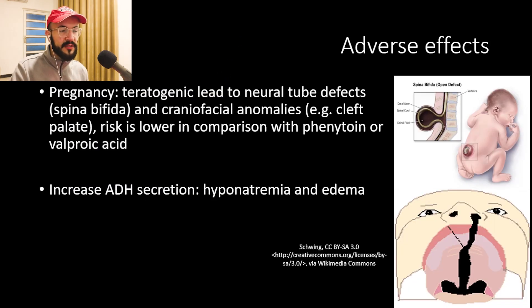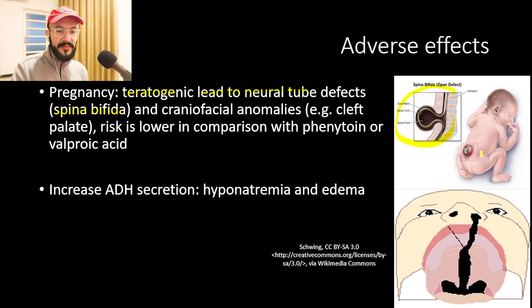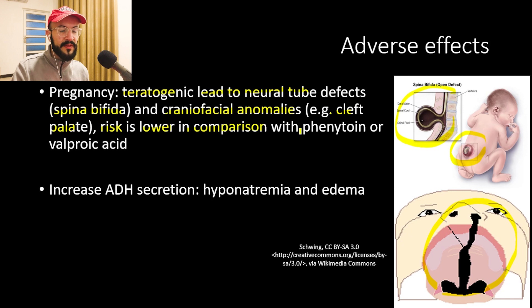If carbamazepine is given during pregnancy, it is teratogenic. It may lead to neural tube defects like spina bifida, which is incomplete closing of the spinal cord, leading to the spinal cord protruding into the outside environment, as shown in the picture here. It may also lead to craniofacial anomalies in the baby, for example the cleft palate. The risk of teratogenic anomalies is lower for carbamazepine compared to phenytoin or valproic acid, which cause more teratogenic effects.